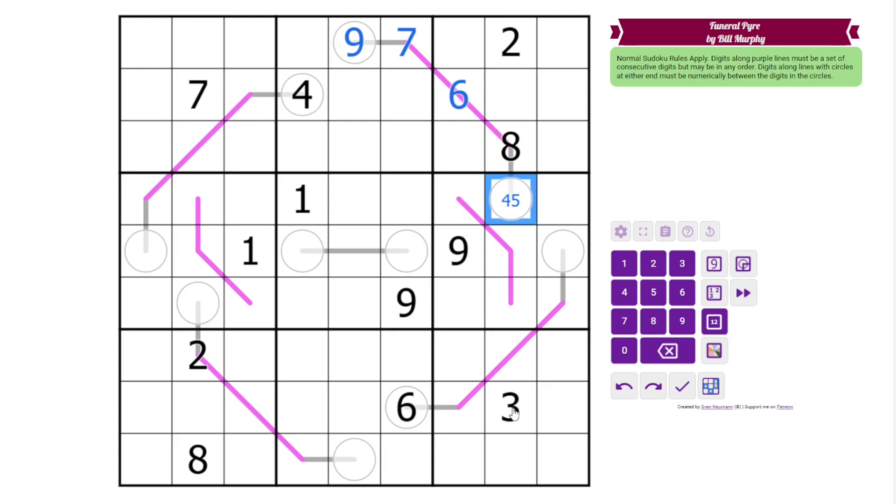And then this is going to be smaller than six. And in this case, we only have two possibilities. We have a three, two, one looking at that cell.